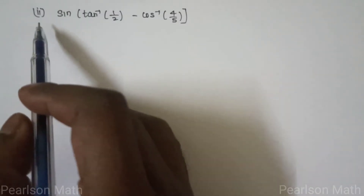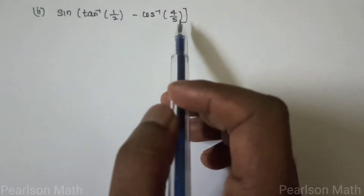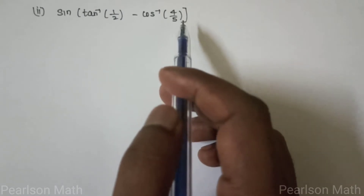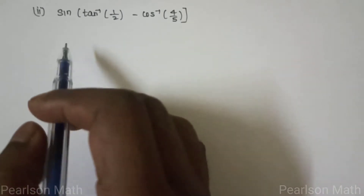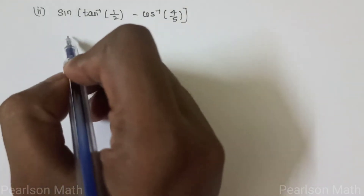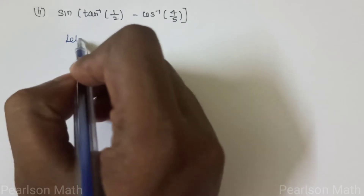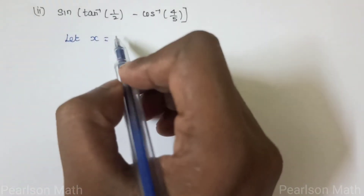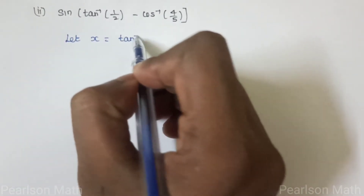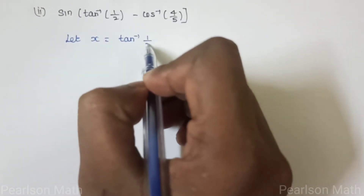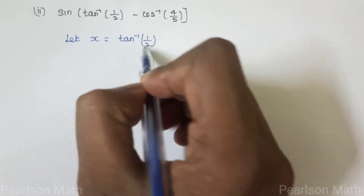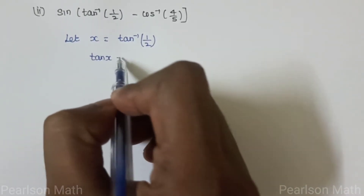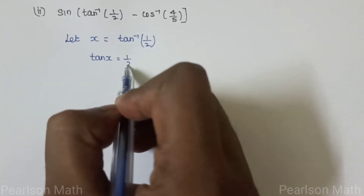Second subdivision: sin inverse of 1/2 minus cos inverse of 4/5. Let x equal to tan inverse of 1/2, so x equals tan inverse of 1/2, which means tan x equals 1/2.